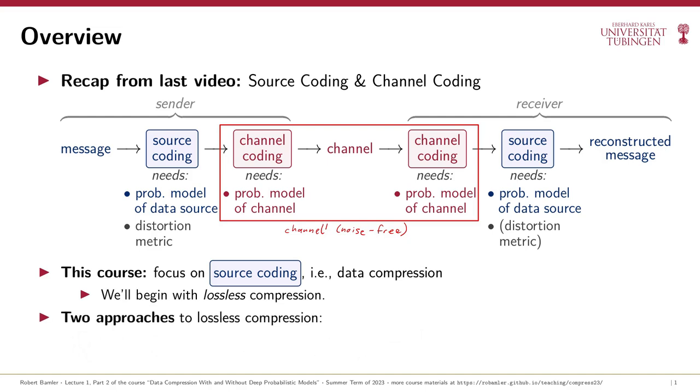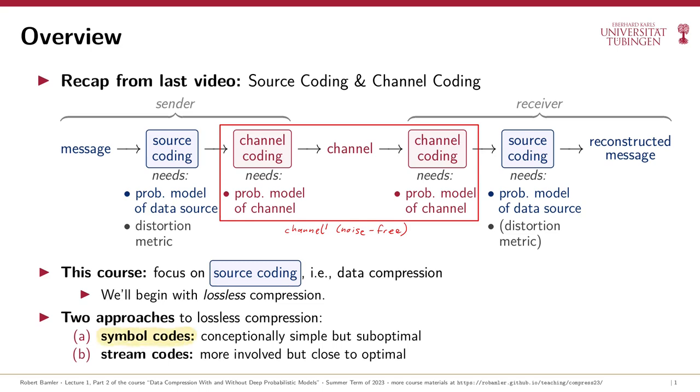There are two main approaches to lossless compression. First, so-called symbol codes are conceptually simple, but we'll see later in the course that they achieve suboptimal bitrates, in particular when they are used in modern machine learning-based compression methods. So-called stream codes, on the other hand, achieve very close to optimal bitrates without sacrificing computational efficiency, but they are a bit more difficult to understand. So, to keep things simple, we'll start in this video with symbol codes, and we'll defer stream codes to lectures 5 and 6.